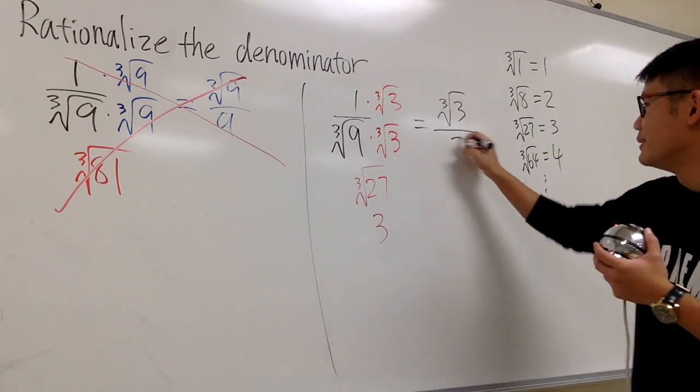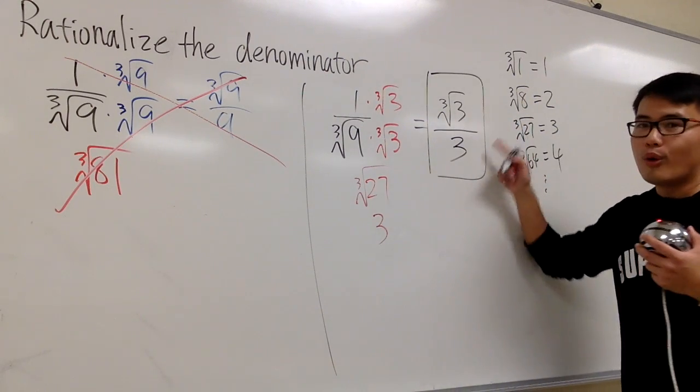So just nice. This is it, cube root of 3, all over 3.